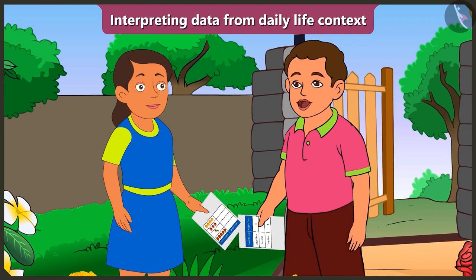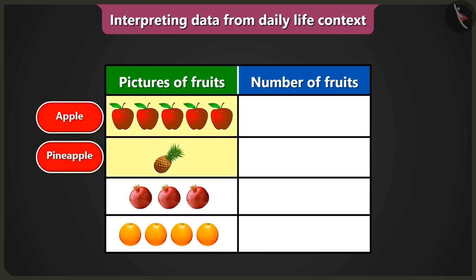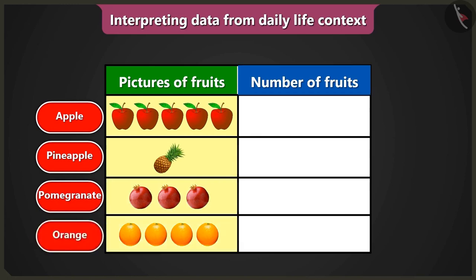You do not have to go anywhere. All the data has been shown in this table. Look, which pictures are there in the column of fruits in the table? There are pictures of apple, pineapple, pomegranate, and orange. Now, have you understood that the data given is about which fruits?